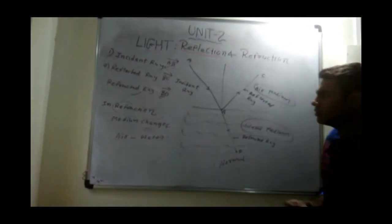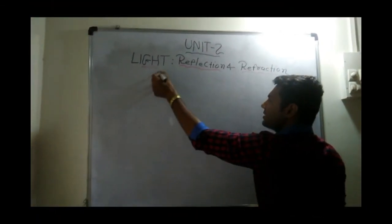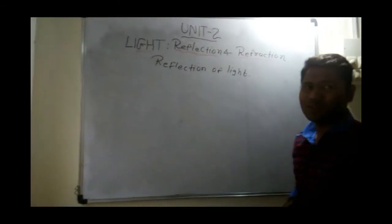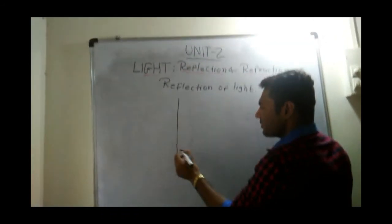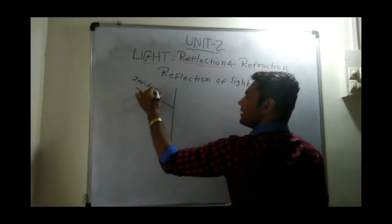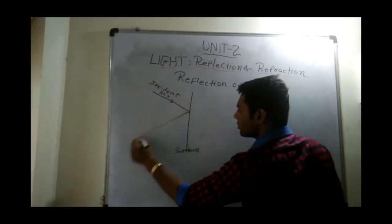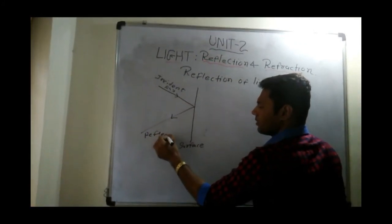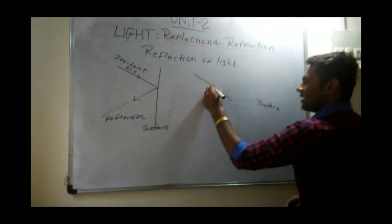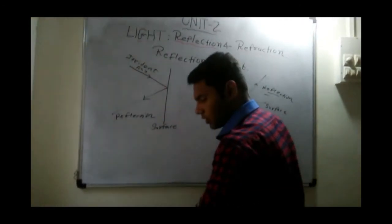Now, reflection: when an incident ray does not cross the surface and comes back at some angle, it is called reflection. There are two types or two ways of reflection.